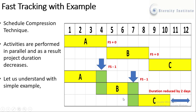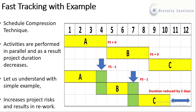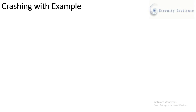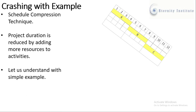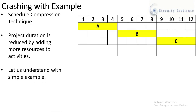In this way our duration is reduced by two days. Similarly, when we do fast tracking it increases the project risks. Now let us consider crashing. Crashing is also a schedule compression technique, and in crashing the project duration is reduced by adding more resources to the activities.